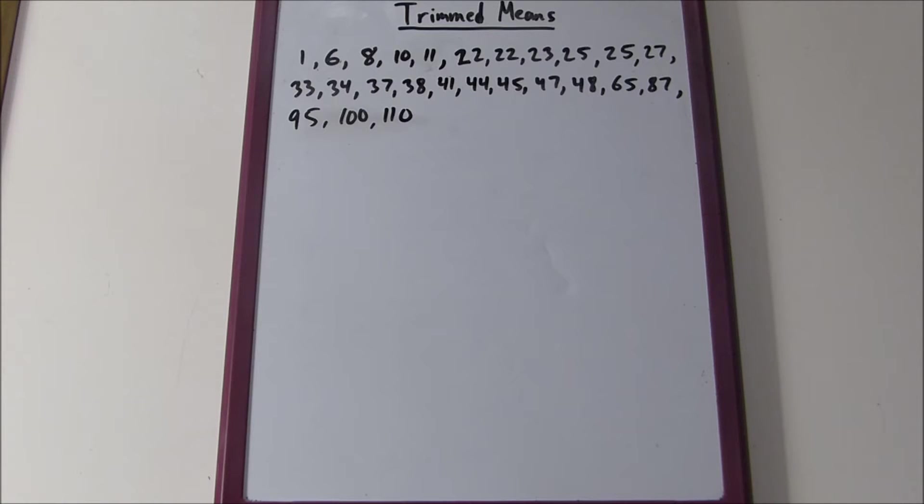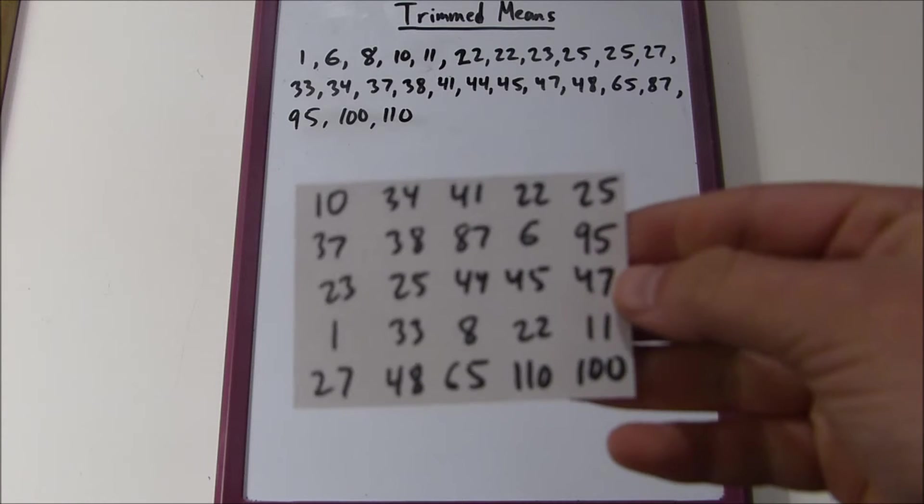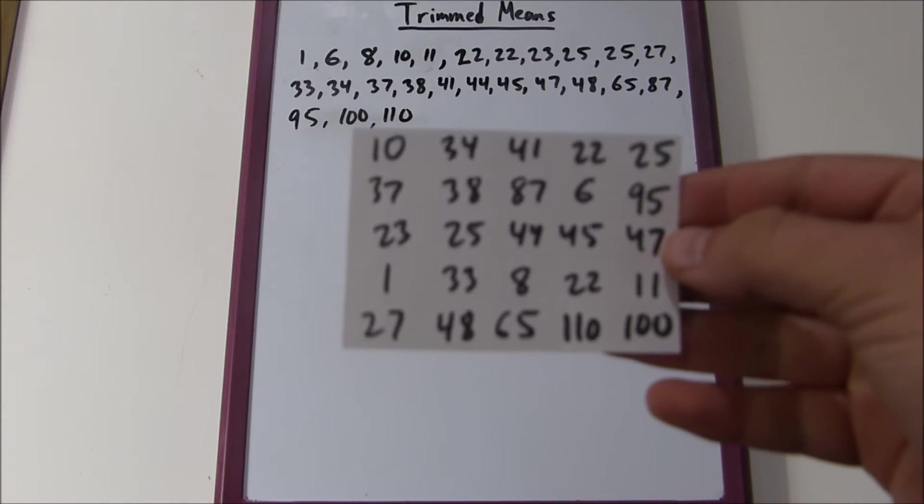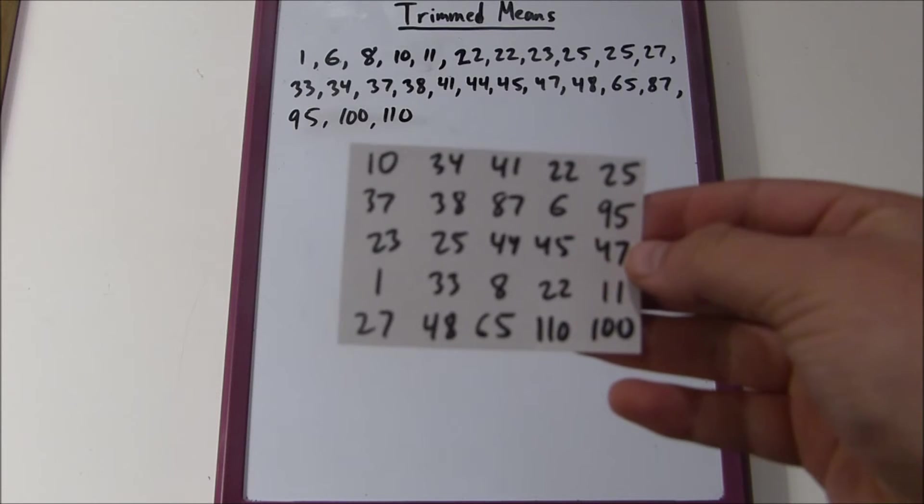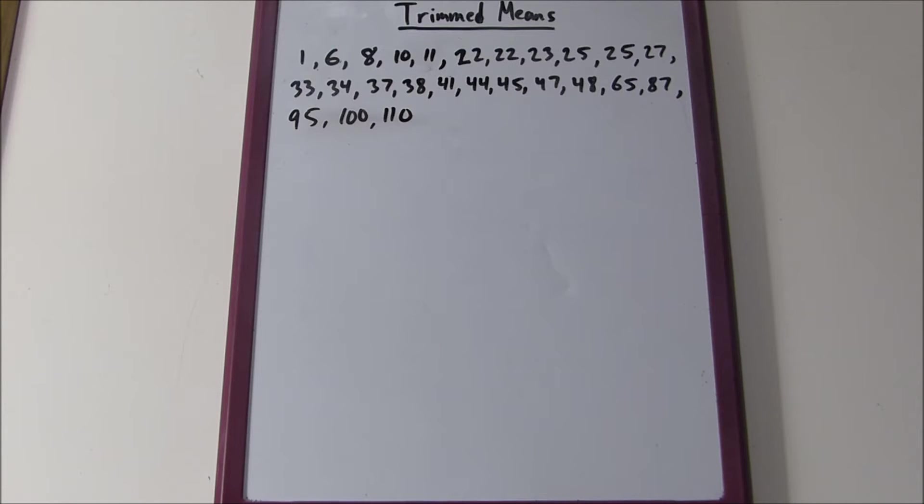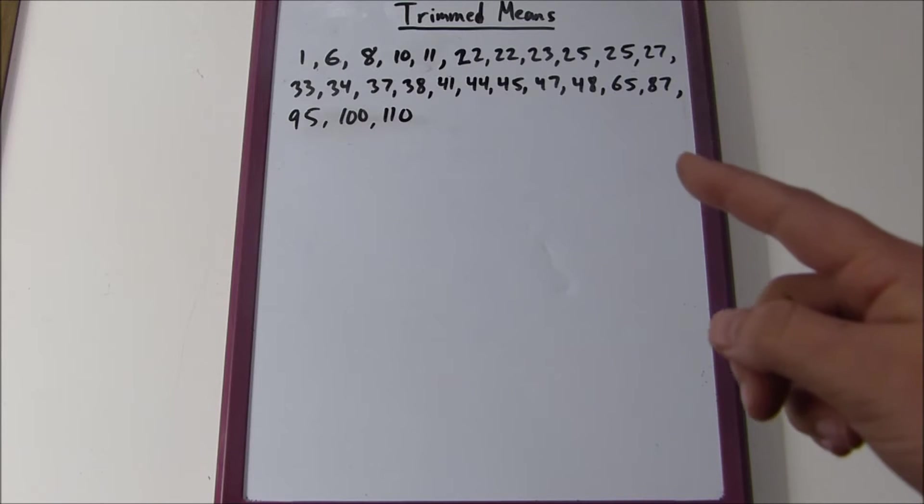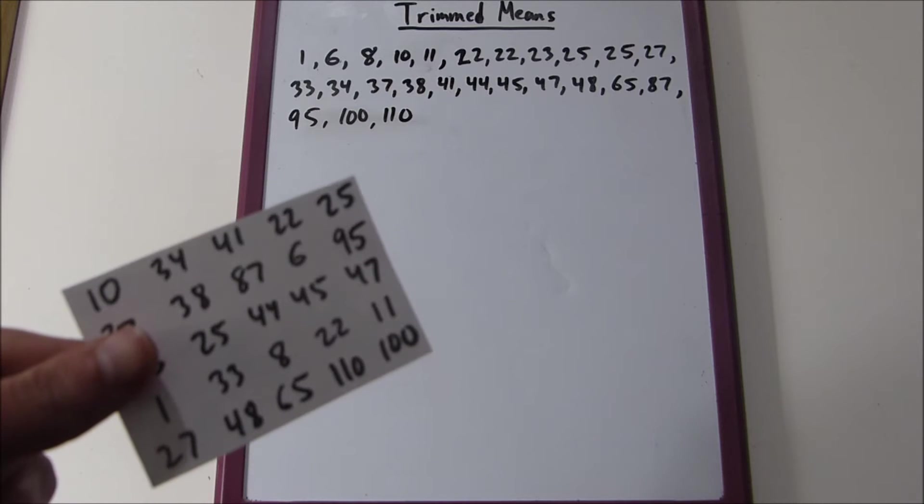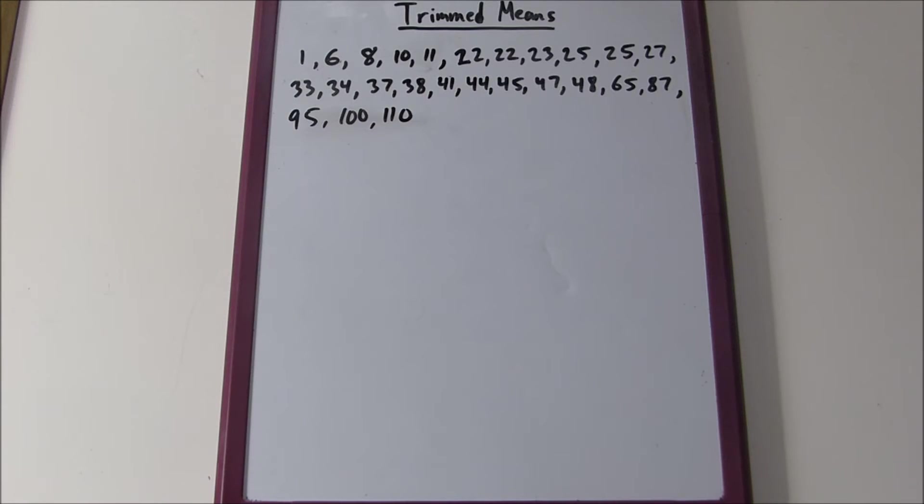The way we get a trimmed mean is first we have our distribution. I have 25 values ranging from 1 to 110. What you want to do is order the data values from smallest to largest, then delete a selected number of values from each end of the ordered list and average the remaining values. I've ordered every single number in this distribution from smallest to largest.